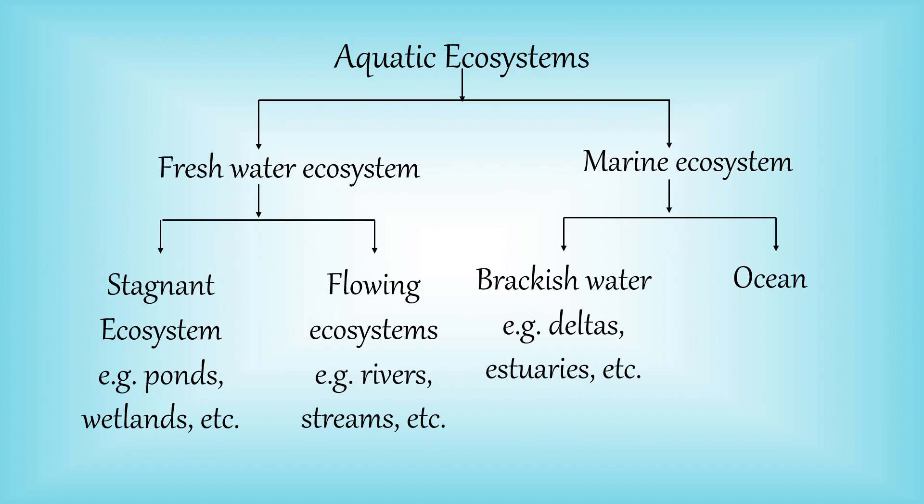Aquatic ecosystems are basically classified into two types: freshwater ecosystem and marine ecosystem. Freshwater ecosystems can be stagnant or flowing. Examples of stagnant ecosystems are ponds and wetlands, whereas flowing ecosystems include rivers and streams. Marine ecosystems include brackish water like deltas and oceans.